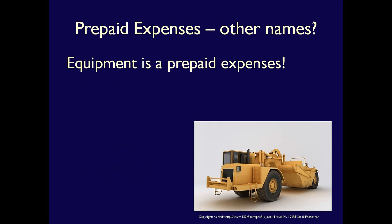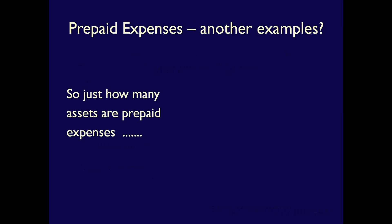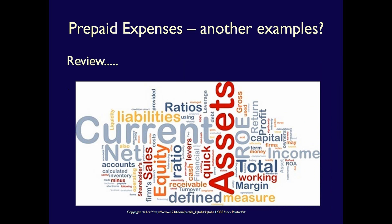Are there others? Actually, many of the accounts under property, plant, and equipment are prepaid expense accounts. Let's look at equipment. It's an asset because it has future benefit for the company — it's going to be used in the future to help generate revenue, which means it's going to become an expense. That's the same as supplies and prepaid rent, so equipment is also a prepaid expense that doesn't include the word prepaid. In fact, a lot of asset accounts are prepaid expenses in disguise, and we need to review the asset section of the balance sheet to see how many there are.